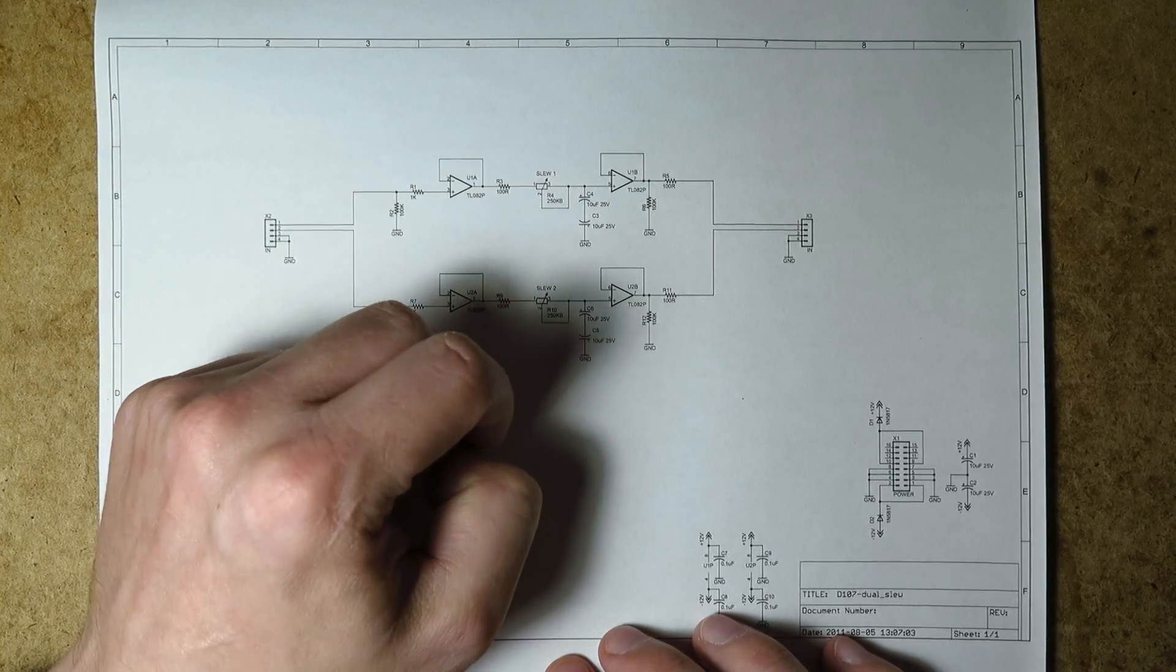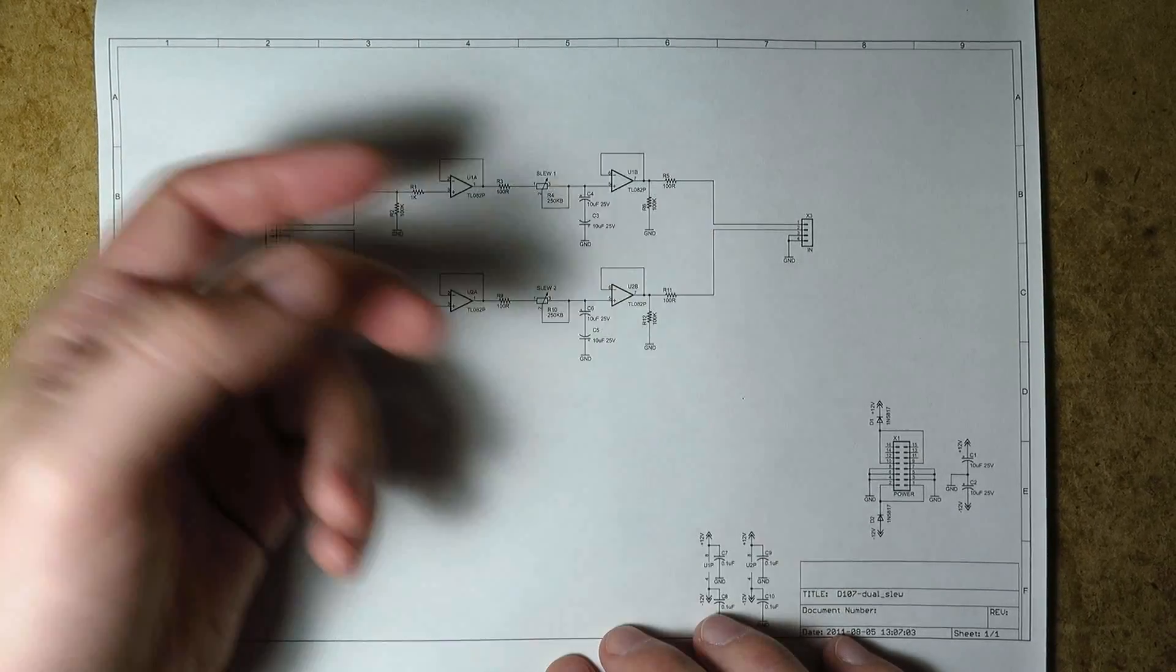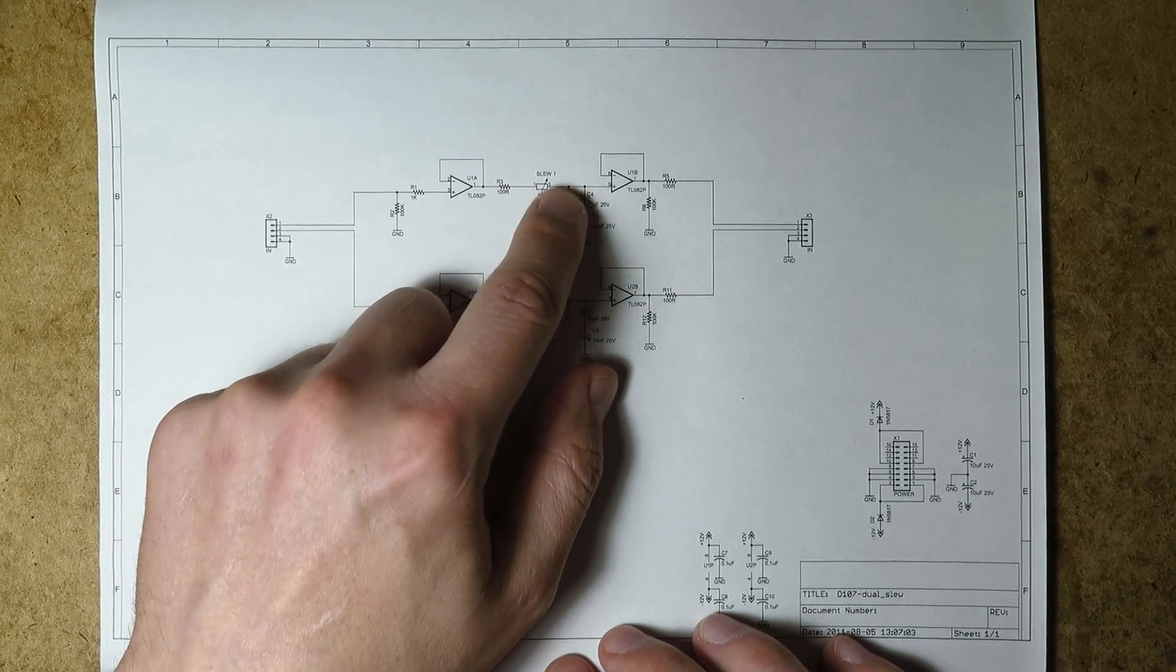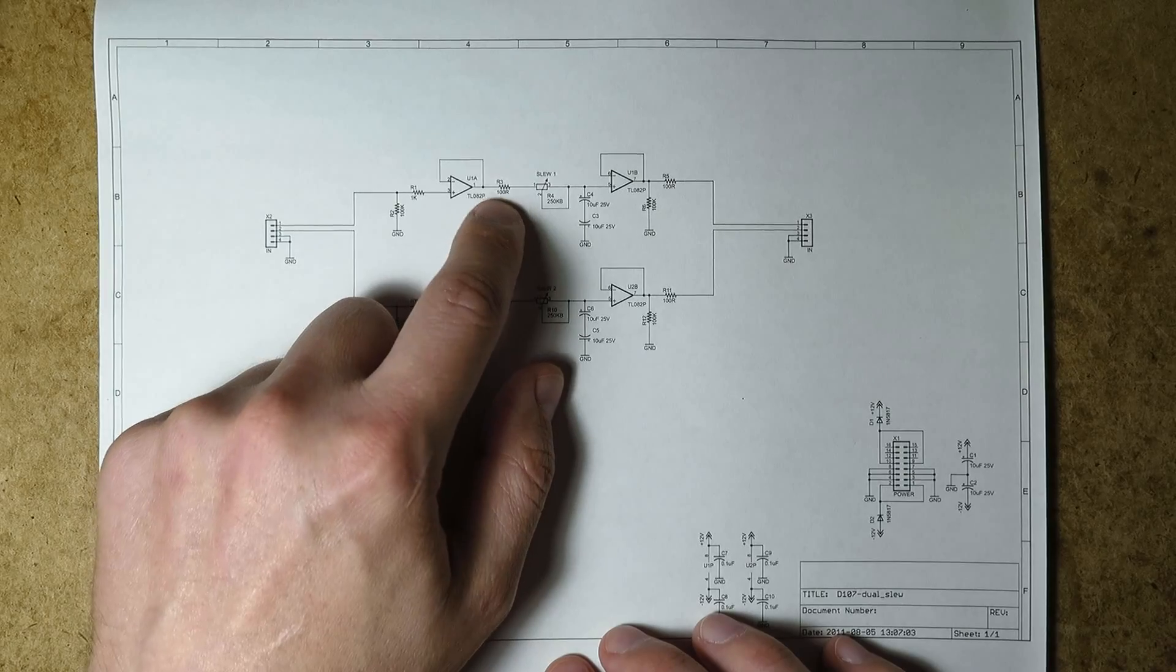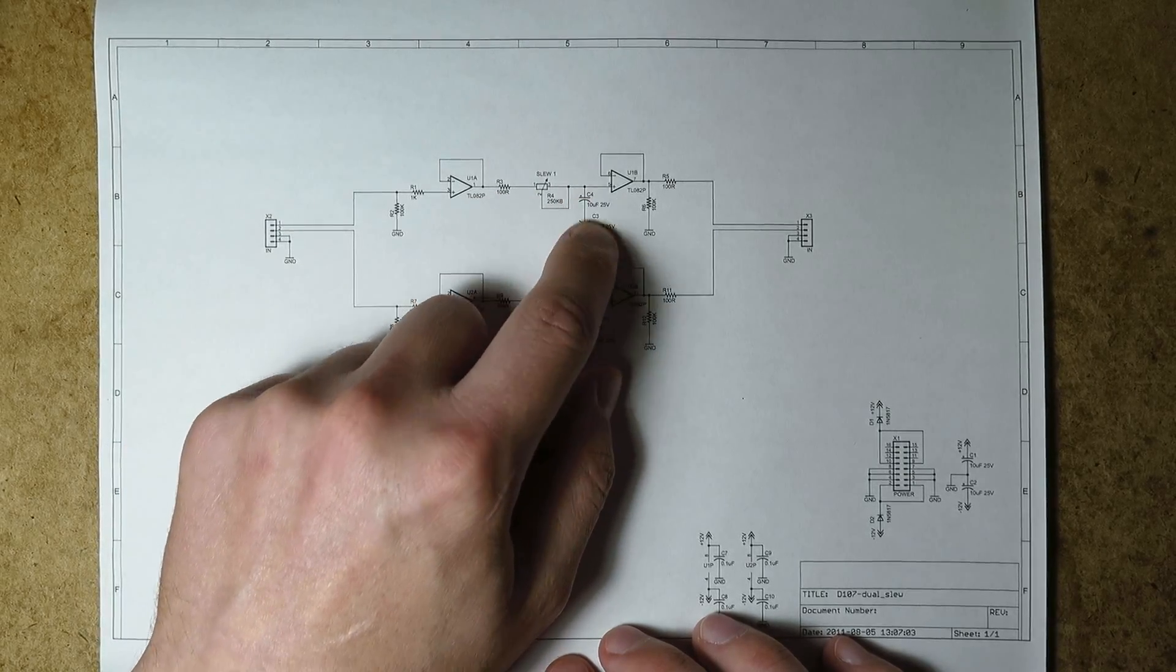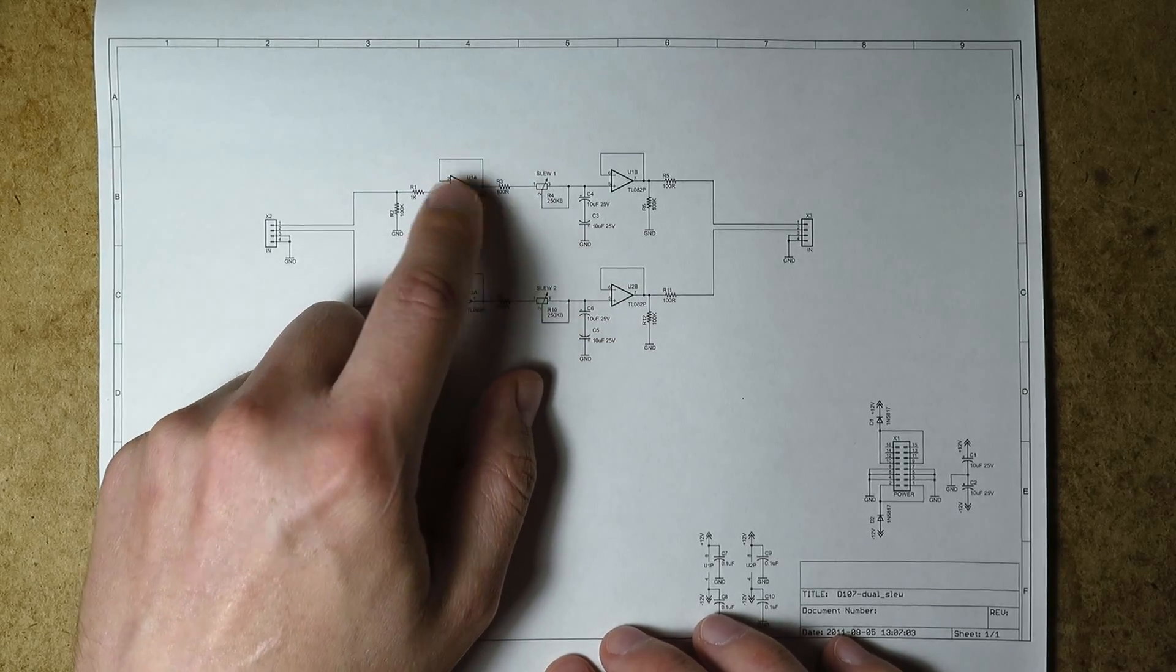And I've just chosen these values from some experimentation to give a good range of control from pretty short. Obviously, if this was at zero, this would charge up as quickly as it could charge through this small 100 ohm resistor. I've just put this resistor here to prevent there being too much capacitive loading directly on the output of here.